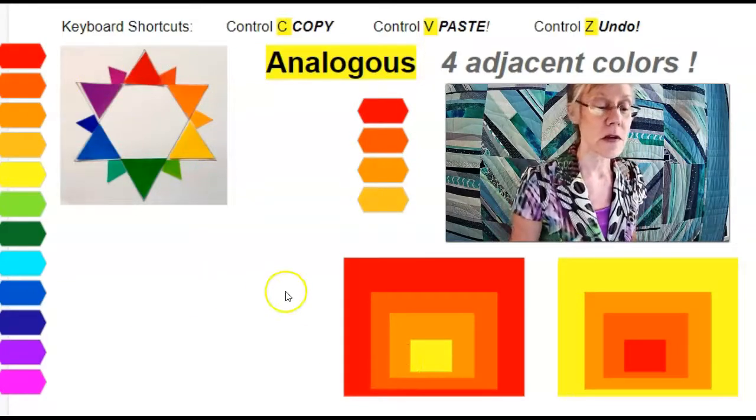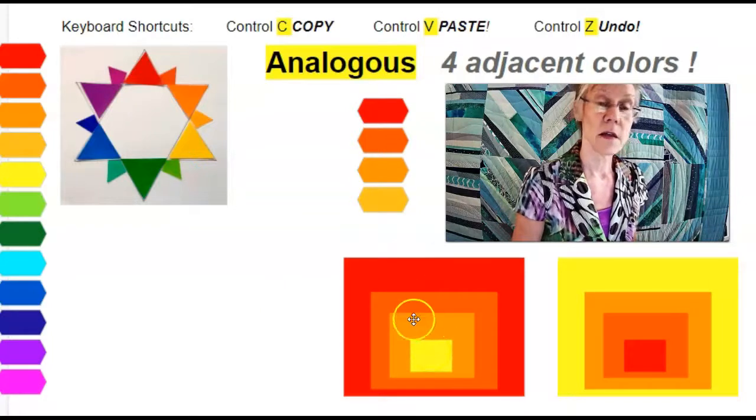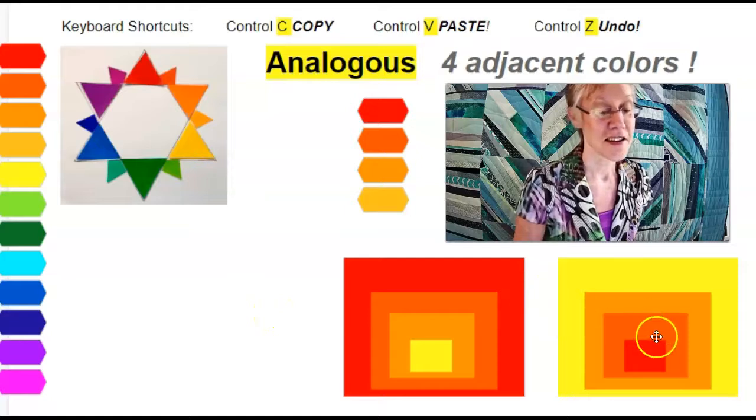When you color your shapes, they may go dark to light, like this one, or light to dark, like this one.